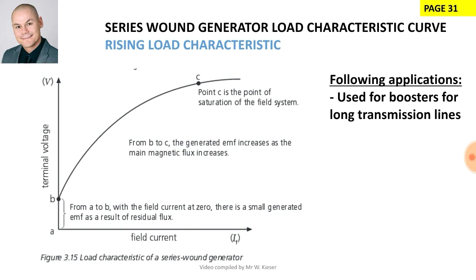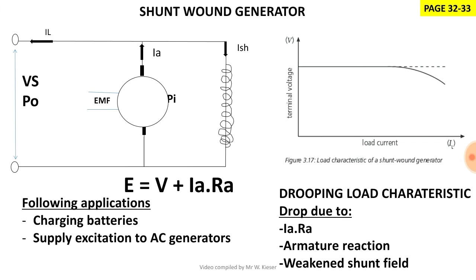The application for a series-wound generator: it can be used as a booster for long transmission lines. For the shunt-wound generator, the field winding is connected in parallel with the armature. The generator produces armature current; at the junction, most of the current goes through the supply and a small amount goes through the shunt winding. For the shunt generator EMF formula, we have only two volt drops, as voltage remains the same across the terminal voltage and the shunt winding.